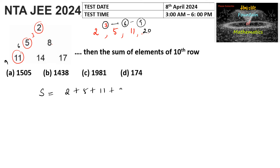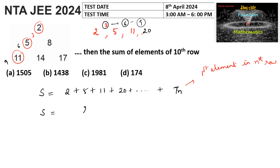In the first row there is one element, in the second row two elements, and similarly the nth row will have n elements. Let us consider Tn, where Tn represents the first element in the nth row — so 2 is the first element in the first row, 5 is the first element in the second row, and so on.